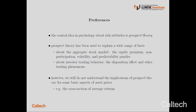As for models with investor preferences, the central idea in psychology about risk attitudes is prospect theory. This is a Nobel Prize-winning framework that has been used to explain a very wide range of empirical facts — for example, facts about the aggregate stock market such as the equity premium puzzle, the fact that long-run average stock market returns tend to be much higher than long-run average interest rates, as well as the excess volatility puzzle, the fact that stock markets tend to be much more volatile compared to returns implied by rational frictionless frameworks.